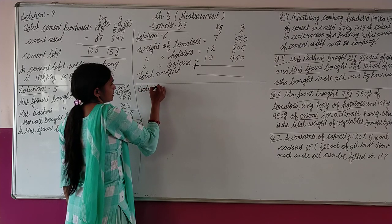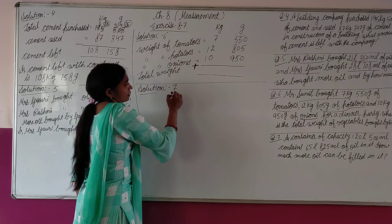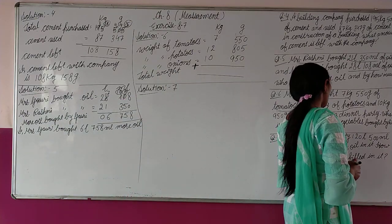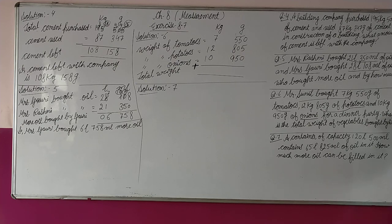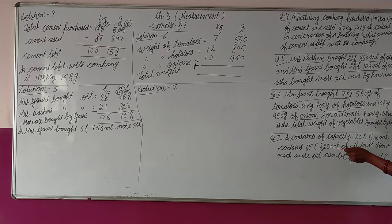Question number 7: A container of capacity 120 liter 500 milliliter — meaning that container, can, drum, or tank can hold 120 liter 500 milliliter. It contains 65 liter 825 milliliter of oil in it currently.